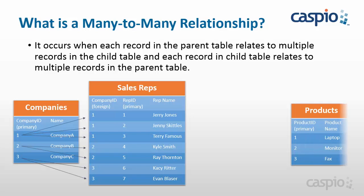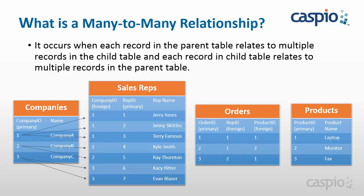Now let's introduce another table of products. The products table also has a primary key, and what the sales reps are selling is basically a laptop, monitor, or a fax machine. So now we introduce a third table that's going to store all of our orders. That third table takes the primary key from the sales rep table and the primary key from the products table and puts them inside the orders table. This is how we create a many-to-many relationship inside Caspio.